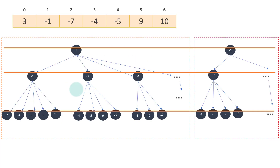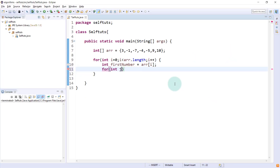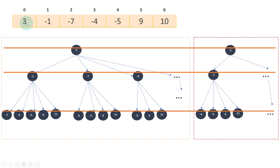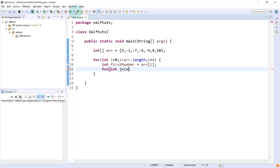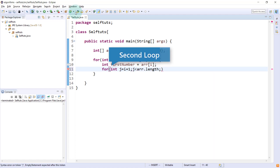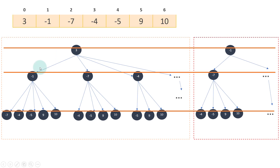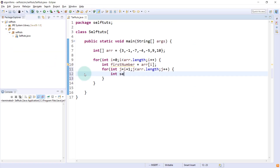Once the first number is selected, we need the second number. The second loop starts at i plus one: for (int j = i + 1; j < array.length; j++). We start at i+1 so we don't reuse the same element. The second number is int secondNumber = array[j]. We traverse up to array.length minus one to avoid an index out of bounds exception.